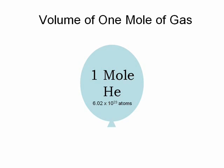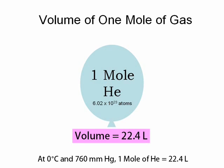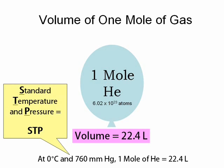We're going to keep that same number of atoms in this balloon the whole time. If I have that many atoms of helium in the balloon, the volume is going to be 22.4 liters. However, that is only true if the balloon is at 0 degrees Celsius and 760 millimeters of mercury — standard air pressure, the same as one atmosphere. Those conditions are known as standard temperature and pressure, or STP for short.